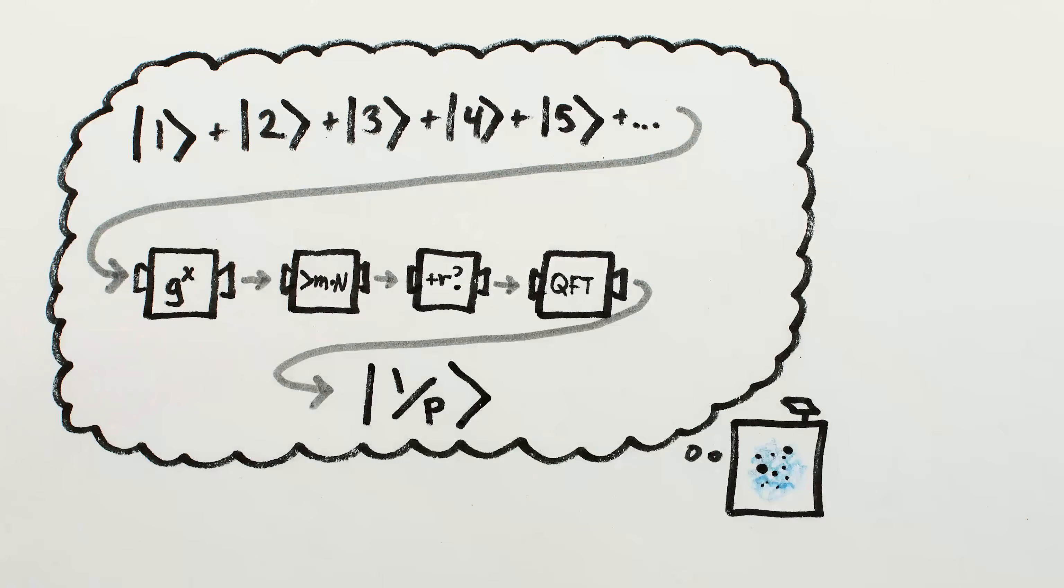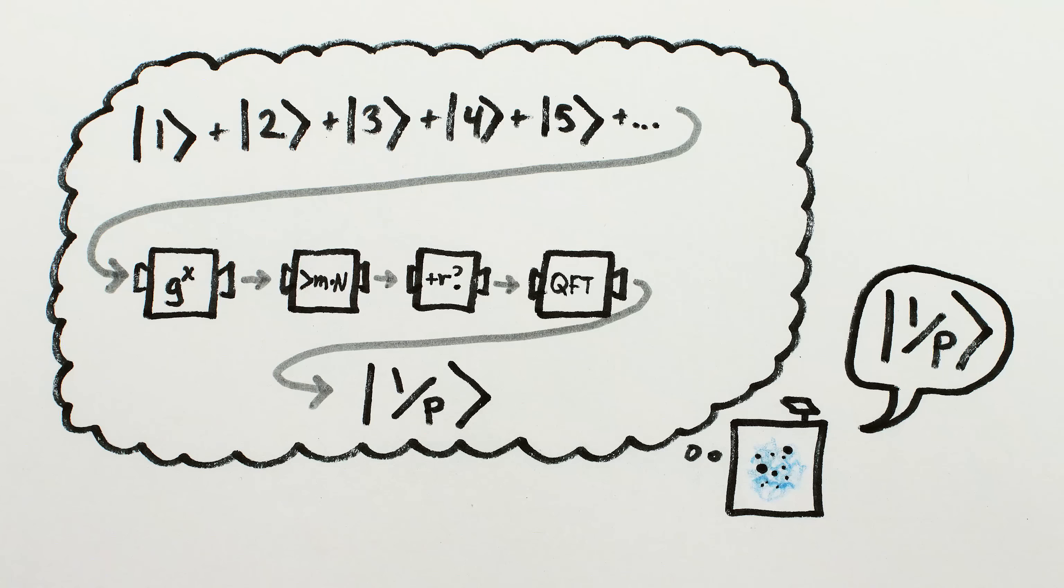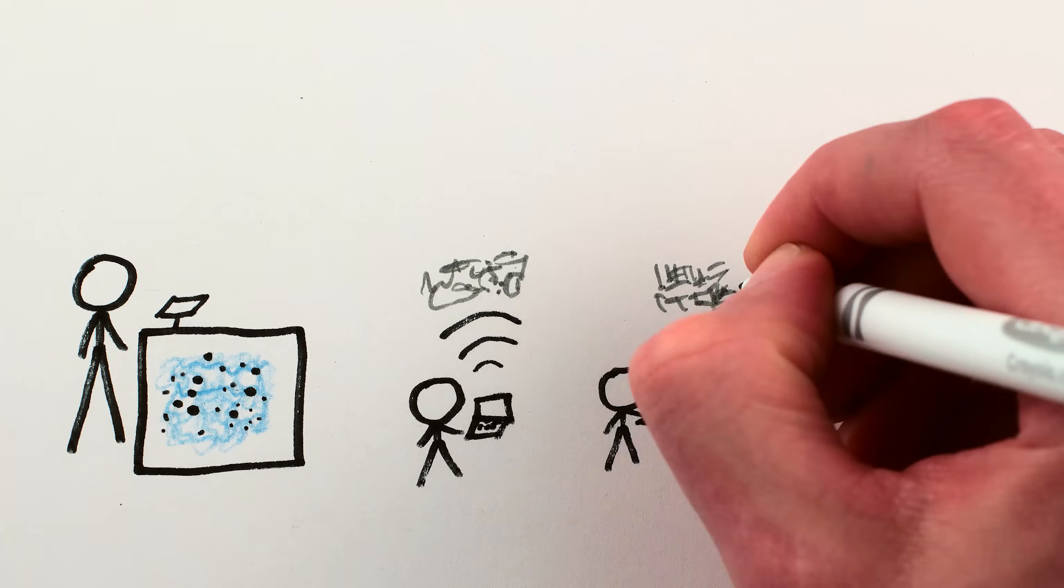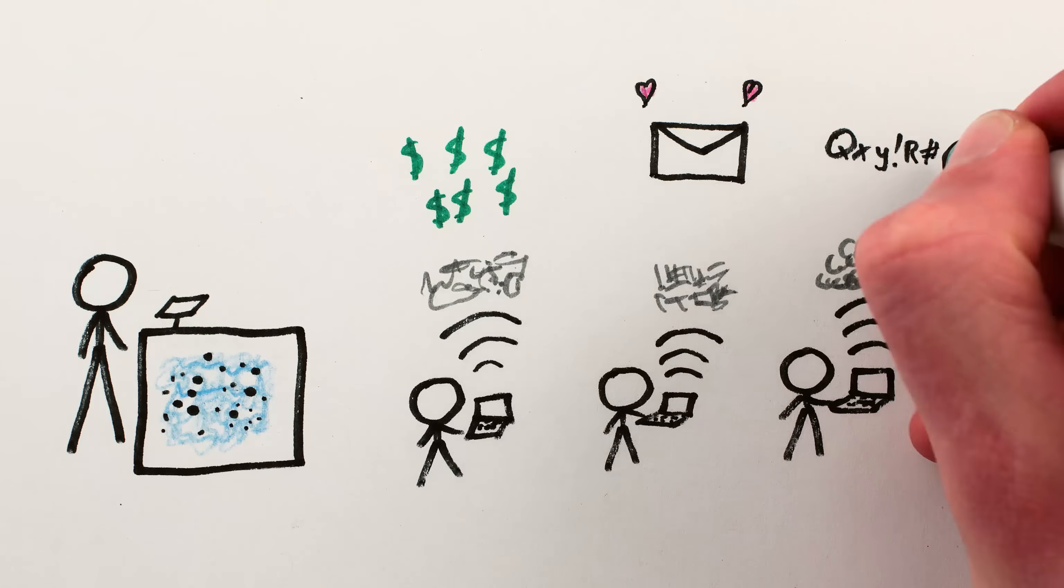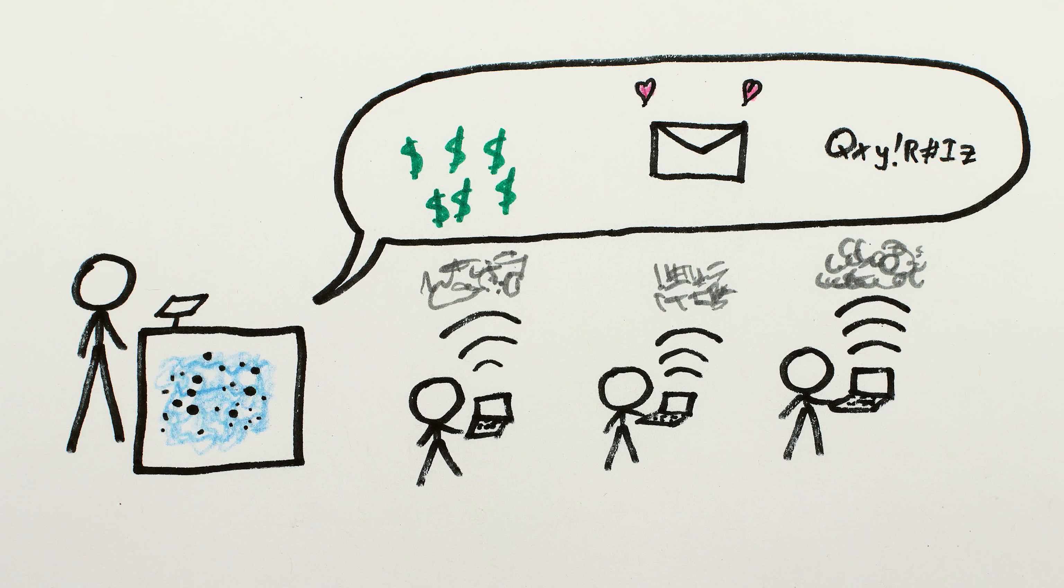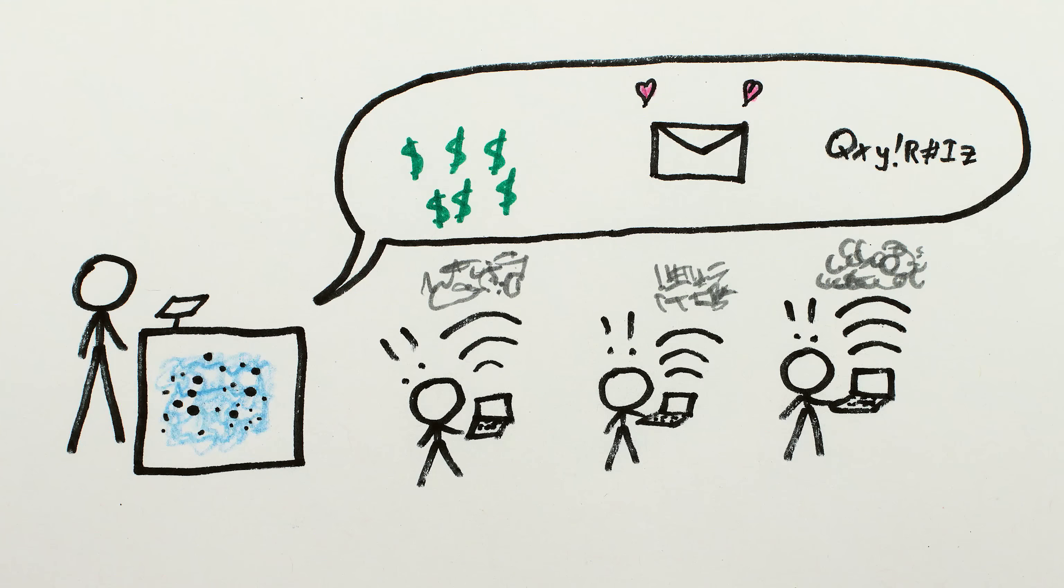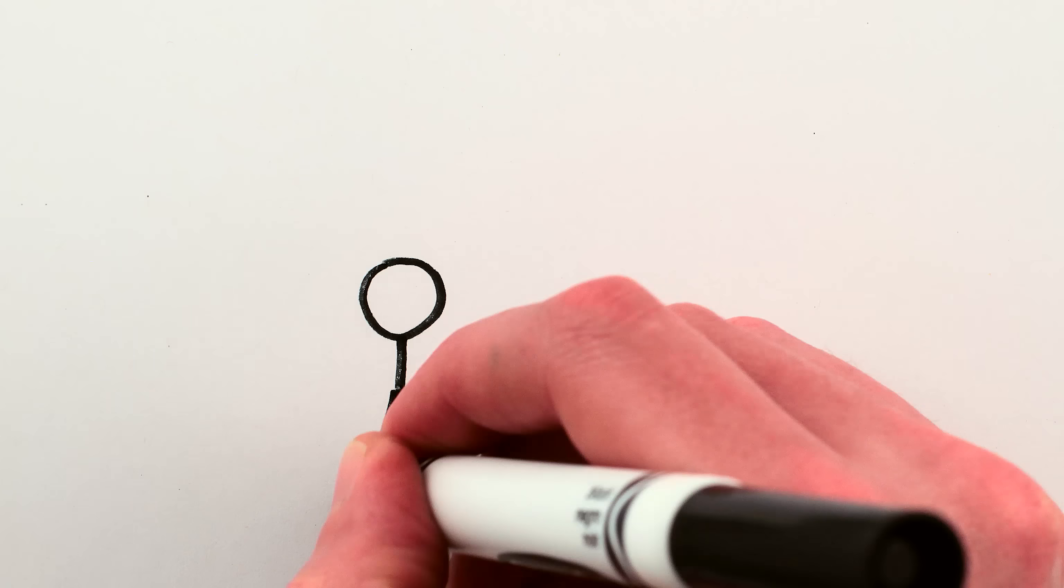The quantum version is ridiculously ridiculously faster, and if a big enough quantum computer is ever built, then Shor's algorithm would allow the user to very easily decrypt any data encrypted with a large number factoring based system, which would pretty much ruin the entire internet.